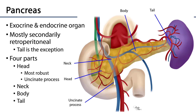The pancreas is predominantly secondarily retroperitoneal, excepting the tail of the pancreas which is nestled adjacent to the hilum of the spleen. Both the tail of the pancreas as well as the spleen are intraperitoneal organs.